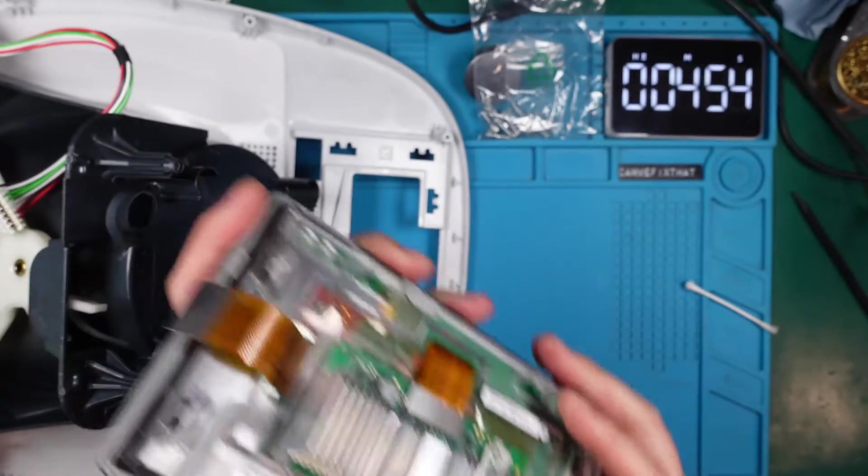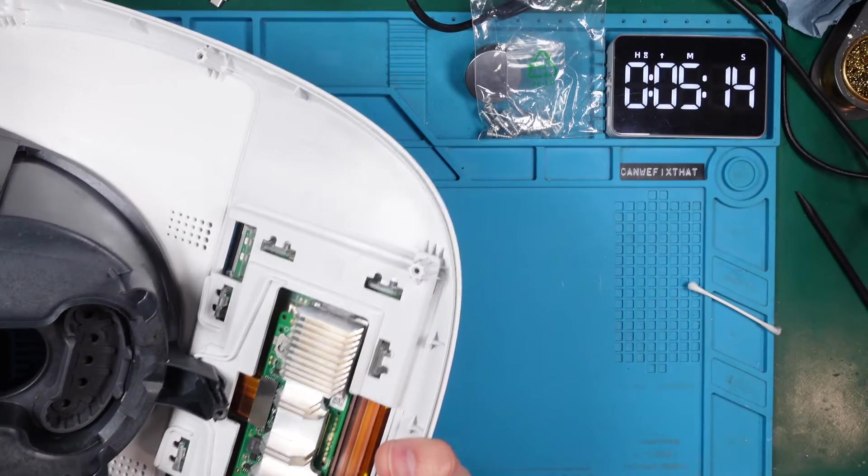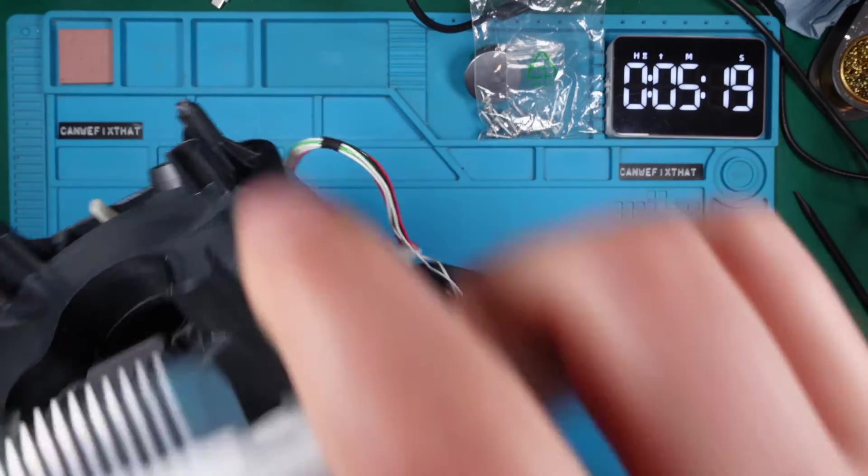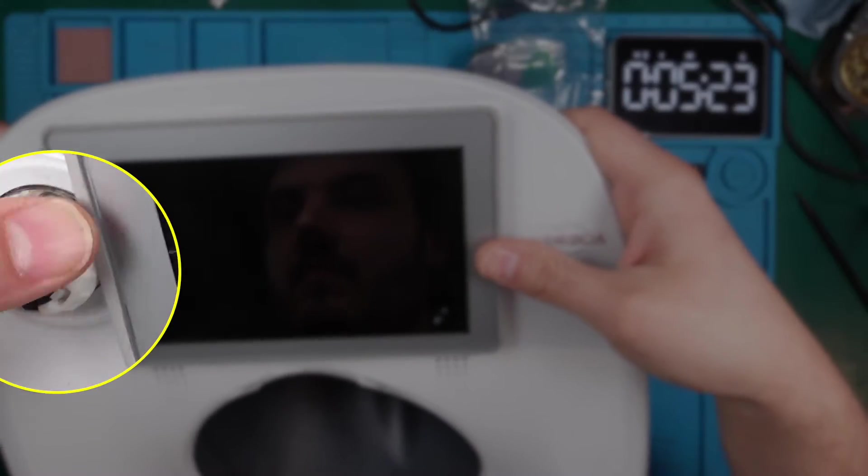The installation of the new screen is not very complicated. These plastic clips do all the hard work for us. I simply need to click it into place. Make sure to remove the knob from the front side before doing this. Otherwise it won't fit.